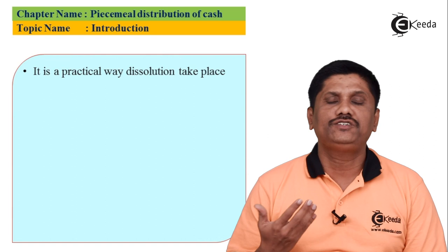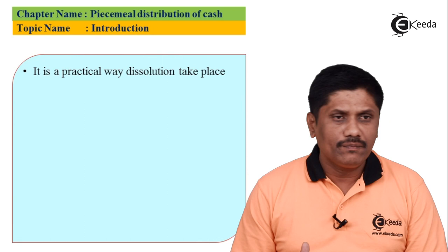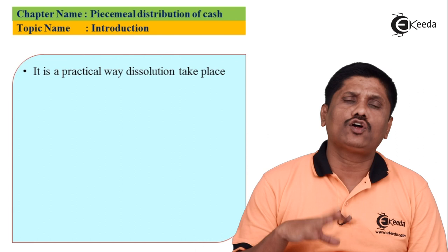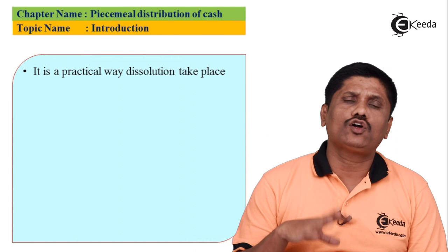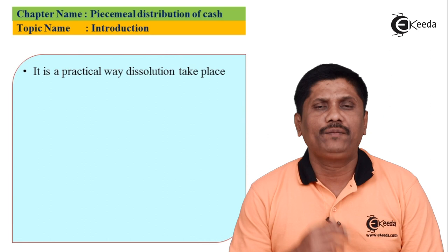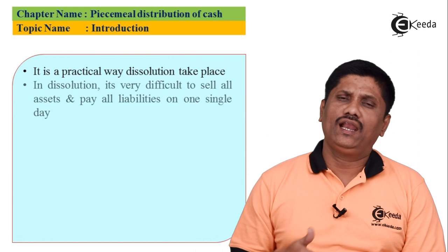After paying preferential creditors, we analyze secured creditors. For example, if you took a bank loan and pledged stock against it, when dissolving the firm, the bank may directly realize the stock. If the bank loan is ₹1 lakh but stock realizes only ₹80,000, there is a deficit of ₹20,000 — that ₹20,000 becomes an unsecured creditor and ranks equally with other unsecured creditors. Conversely, if the asset realizes more than the liability — say liability is ₹1 lakh but realization is ₹1,25,000 — the excess ₹25,000 is returned and added to the available cash balance.